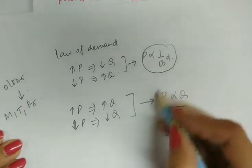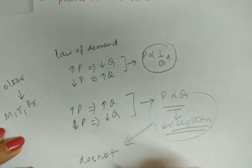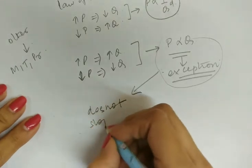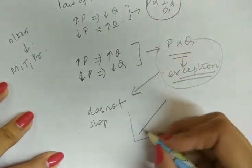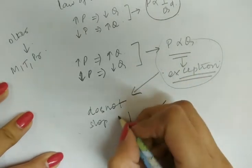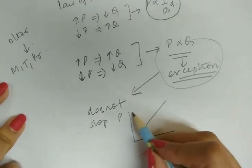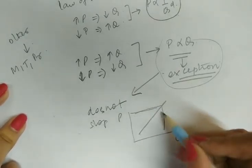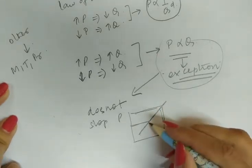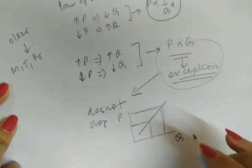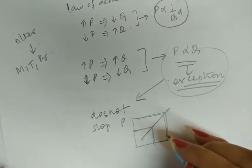In such situations, the demand curve does not slope downwards from left to right, but it slopes upward from left to right. Here we have price and here we have quantity. So with the increase in the price of the commodity, more of a commodity is demanded, and with the fall in the price of the commodity, less of a quantity is demanded. This is a situation where the law of demand does not operate.